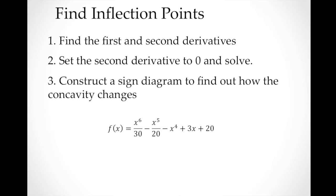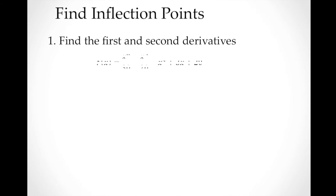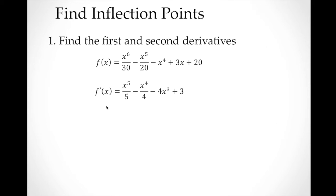Let's work through this example function: f(x) = x⁶/30 − x⁵/20 − x⁴ + 3x + 20. This is a sixth-degree function. The first derivative is f'(x) = x⁵/5 − x⁴/4 − 4x³ + 3. Deriving again, we get the second derivative, which is a fourth-degree function.